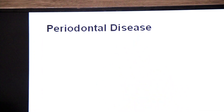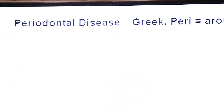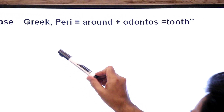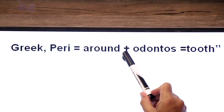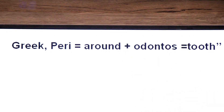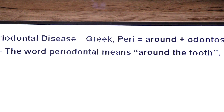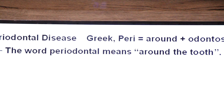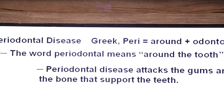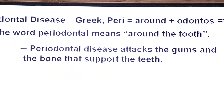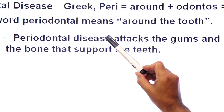Let's first break the term 'periodontal.' The word periodontal comes from the Greek language: 'peri' means around, plus 'odontos' means tooth. So the word periodontal means 'around the tooth.'